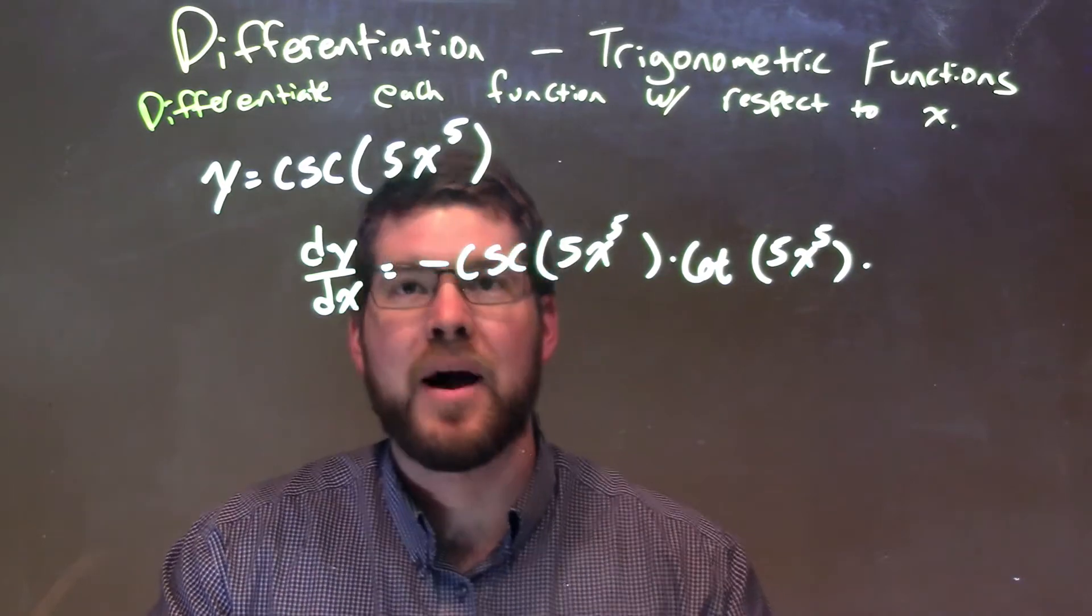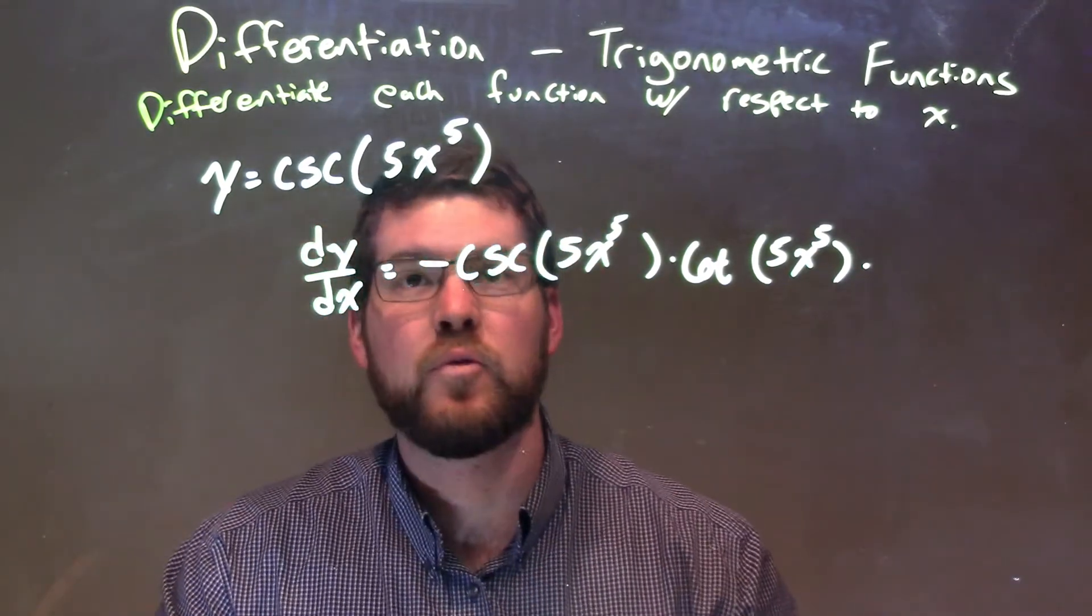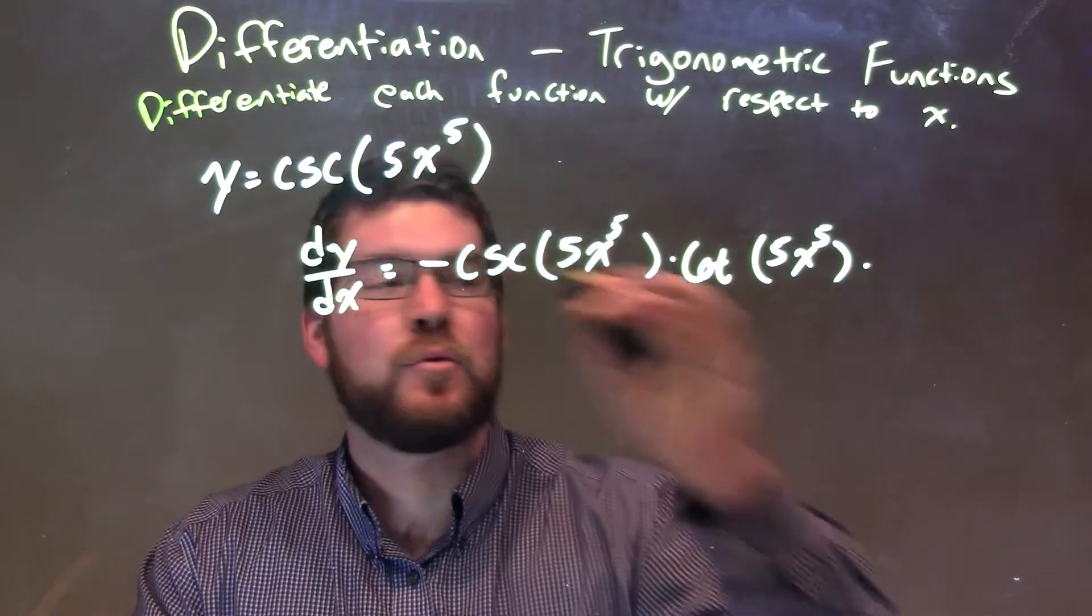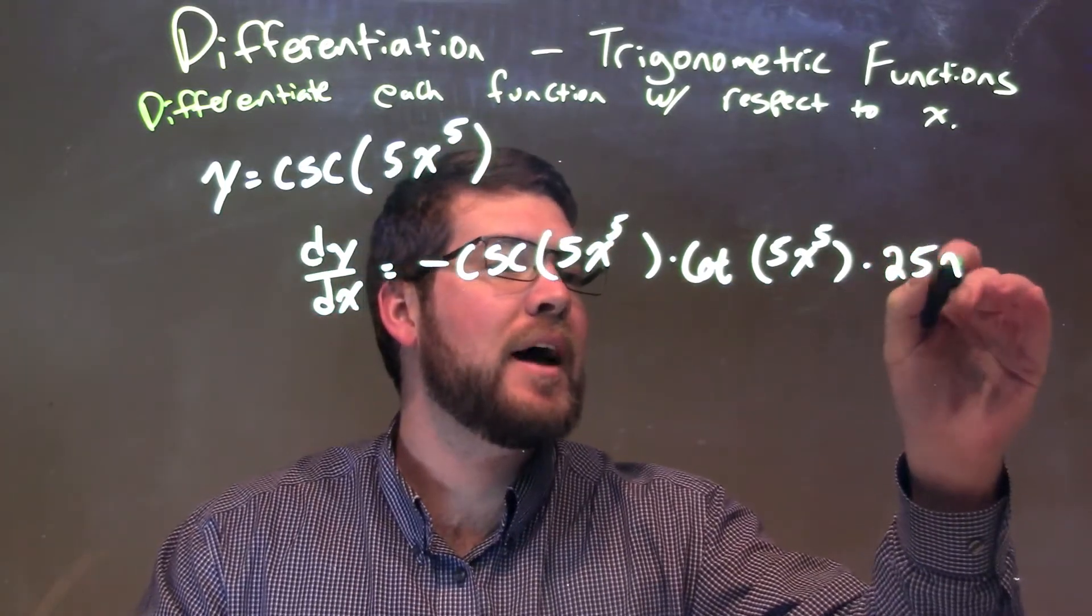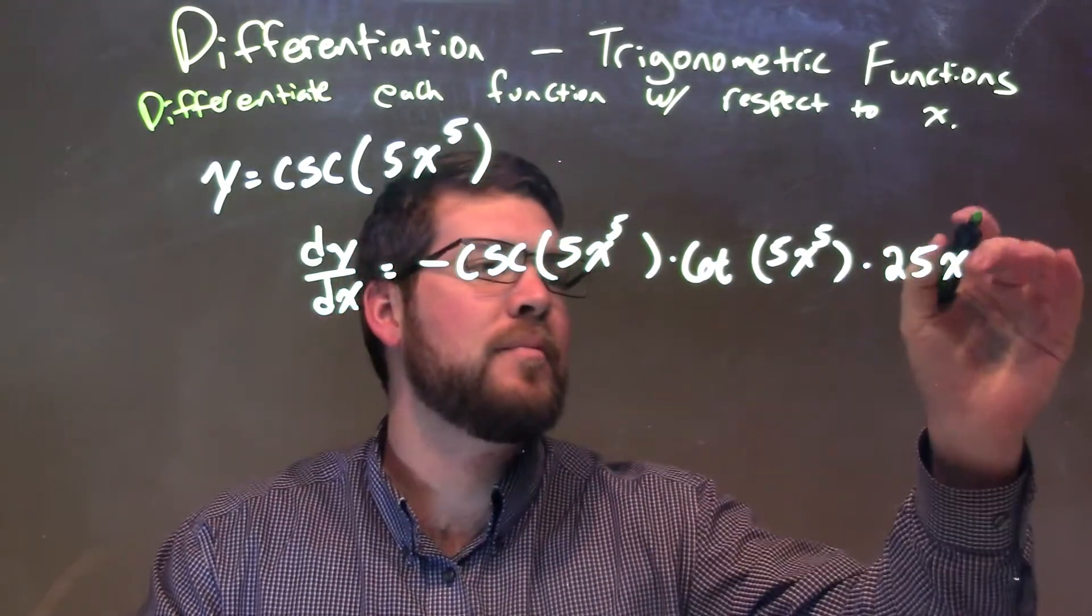Then we need to multiply that by the derivative of the inside. Derivative of the inside, using power rule, 5 times 5 is 25, x to the exponent comes down by 1, 4th power.